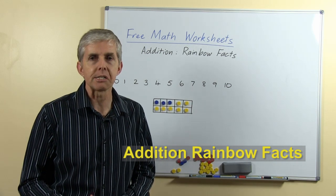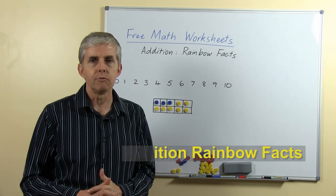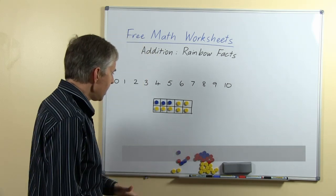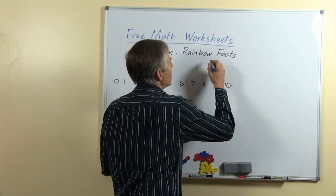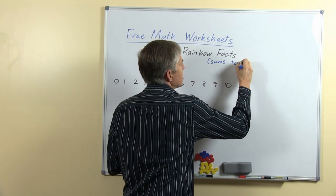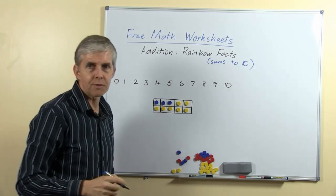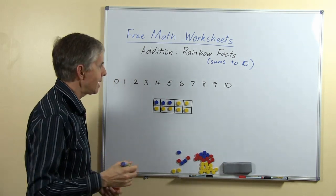This week we're looking at a set of addition facts called rainbow facts. Rainbow facts is another way of referring to sums to 10. It's pairs of numbers which when you add them together you get 10.